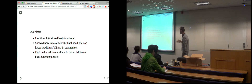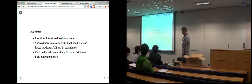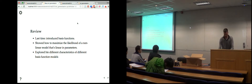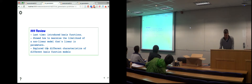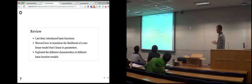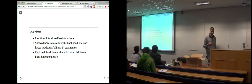Last lecture we introduced basis functions and showed how to maximize the likelihood of a non-linear model that was linear in its parameters, using something very similar to multivariate linear regression. We explored different characteristics of different basis function models — radial bases, Fourier bases, and polynomial bases.